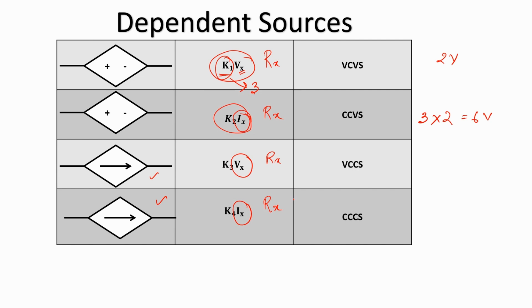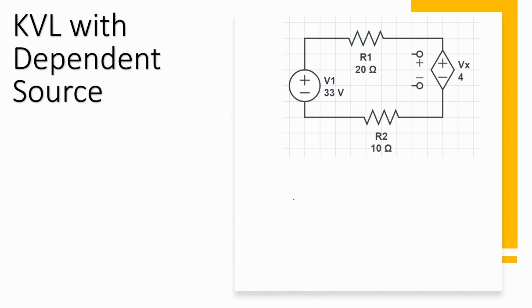Let's look at an example of application of KVL with dependent sources. Here we can distinguish between the dependent and the independent voltage source. The independent voltage source has a value of 33 volts, whereas the dependent voltage source — represented with a diamond shape — is a voltage controlled voltage source, where the controlling parameter is Vx, which is the voltage drop across the 20-ohm resistor.